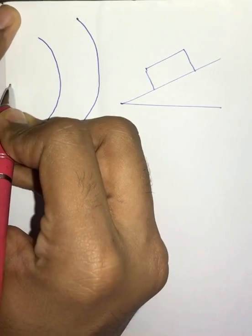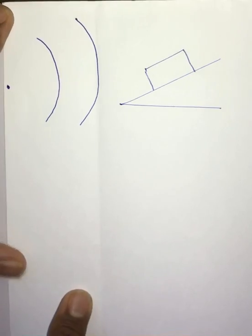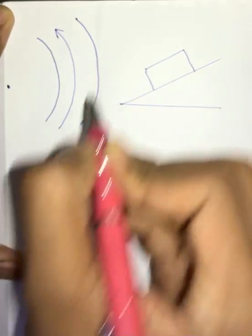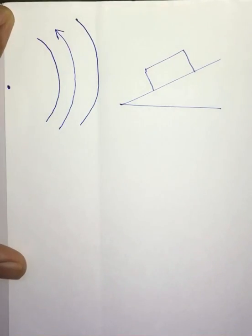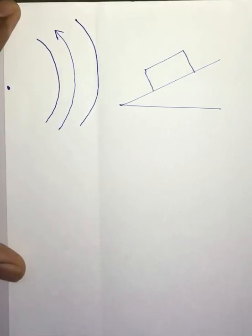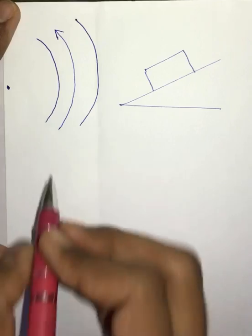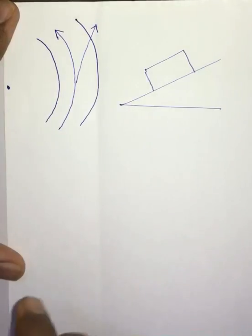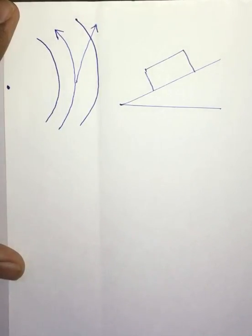Consider this curved path which is a section of a circle, with a center somewhere over here. When a vehicle wants to take a turn on this curved road, it actually wants to move in the curved direction, but due to lack of friction and over-speed, the vehicle will tend to deviate from its path and move away from the road. There is a huge possibility of accident.